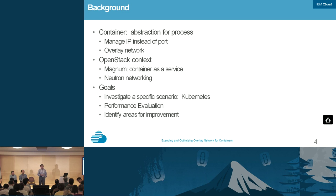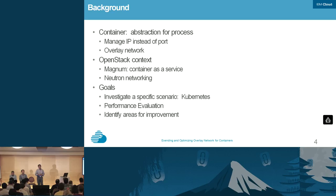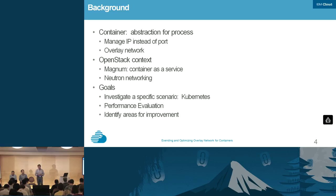Container is a very useful abstraction for a process. When it comes to networking, the initial approach has been to treat it as a process running on a host, so your container would take the host IP and get assigned a port. That works okay, but as containers become more popular, it's pretty cumbersome to manage ports — it's a lot easier to manage IPs instead. This is something that overlay networks give you: it allows you to manage your own IP and isolates you from the underlying network infrastructure. In the OpenStack context, Magnum is a new project — it's a container-as-a-service, and there are many talks on Magnum so we won't go into detail here.